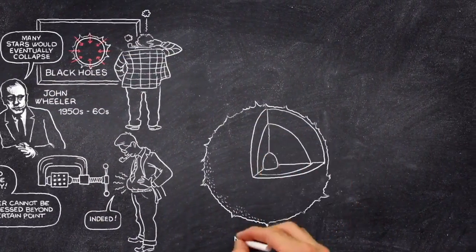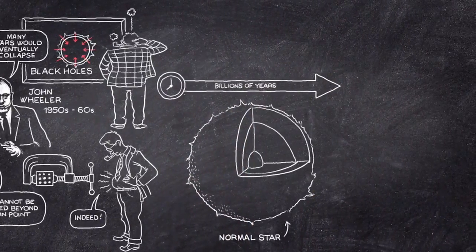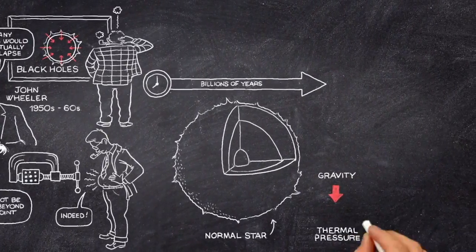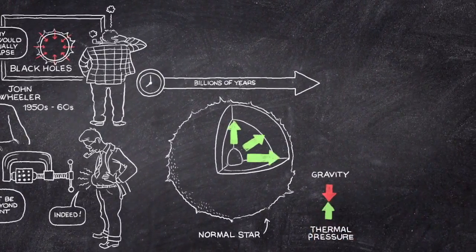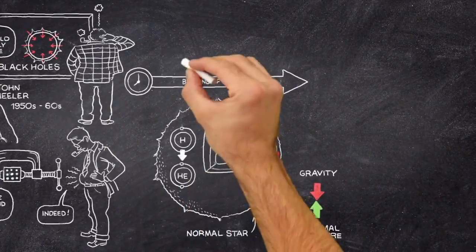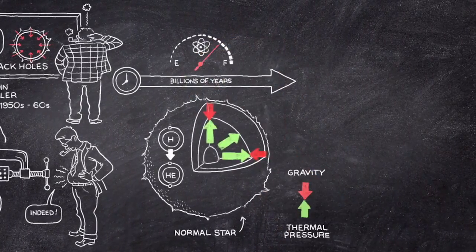During most of the life of a normal star, over many billions of years, it will support itself against its own gravity, by thermal pressure, caused by nuclear processes which convert hydrogen into helium. Eventually, however, the star will exhaust its nuclear fuel.